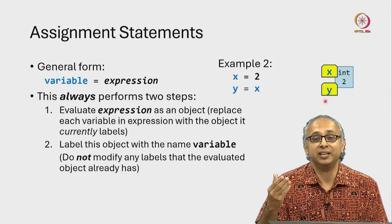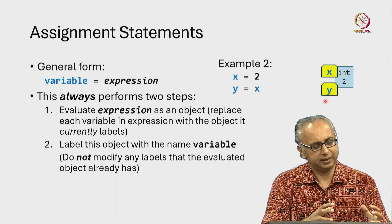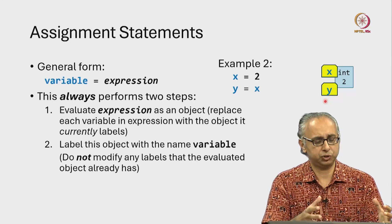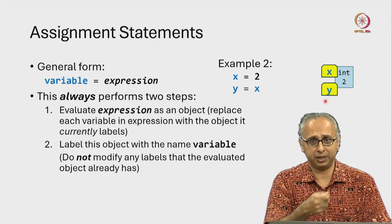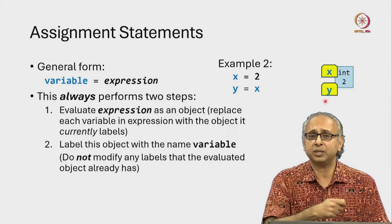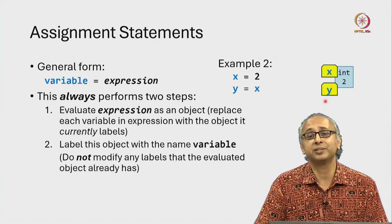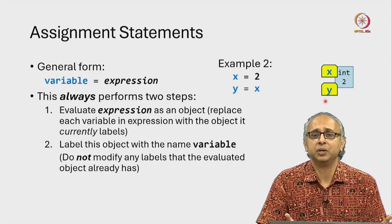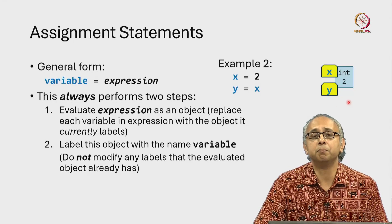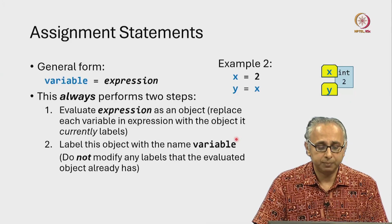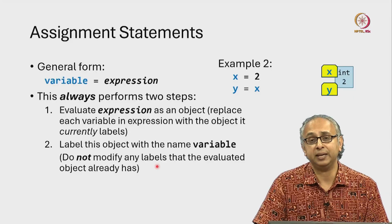The analogy I like to think of is: imagine this evaluated object like a suitcase. I can have a suitcase and put a baggage tag on it. Now someone else could come along and put another baggage tag on the same suitcase, and that's okay. So it's not a problem to have an object with multiple labels on it. The important thing is: do not modify any labels that the object already has.